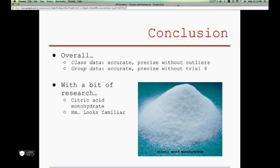In conclusion, the class data showed both accuracy and precision once all the outliers were removed. In comparison, our group's data was accurate but lacked precision as a result of the 4th trial. When the average molar mass, the appearance of the unknown, and the fact that the acid is tributic are all considered, it is very unlikely that the unknown acid was in fact citric acid monohydrate.